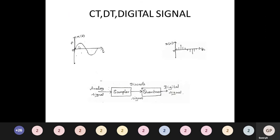Discrete time signals are defined as signals that exist at distinct intervals of time. They are often derived from continuous time signals by a process called sampling, and are denoted as x(n). The key difference: continuous time signals exist at every instant, whereas discrete time signals exist at distinct intervals. Importantly, discretization is done with respect to time only — the amplitude remains continuous.